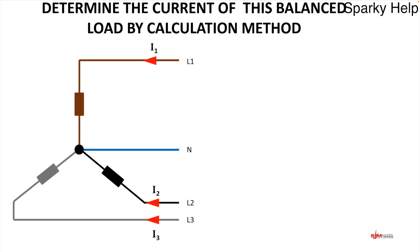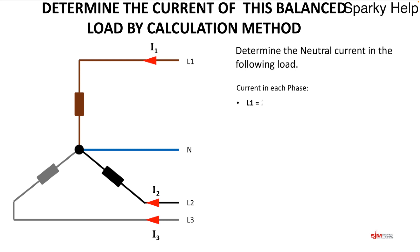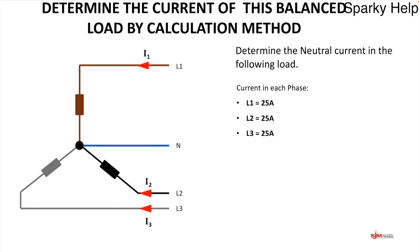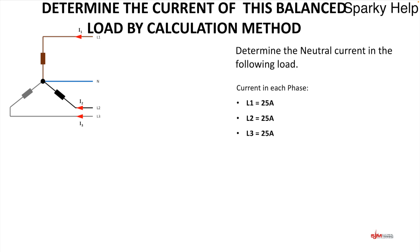An alternative method — and one that many students prefer — is calculation, which is very accurate. We're going to find the neutral current in a load of 25, 25, and 25 amps. We already know the answer is zero, but let's do it by calculation using the formula.